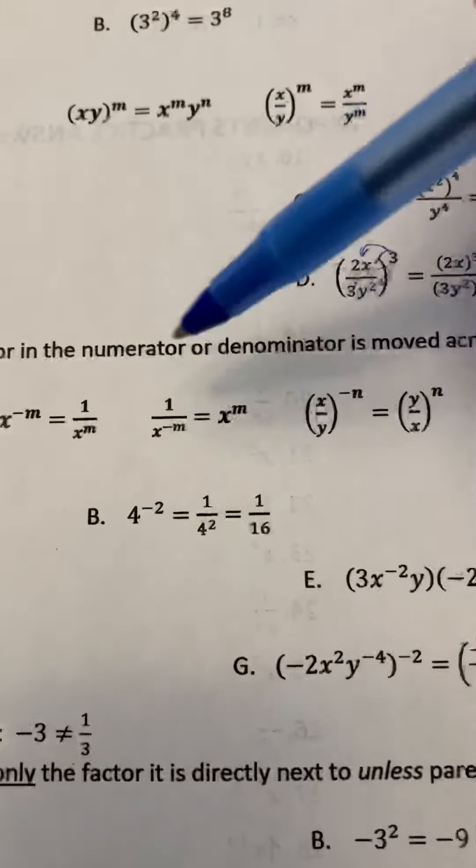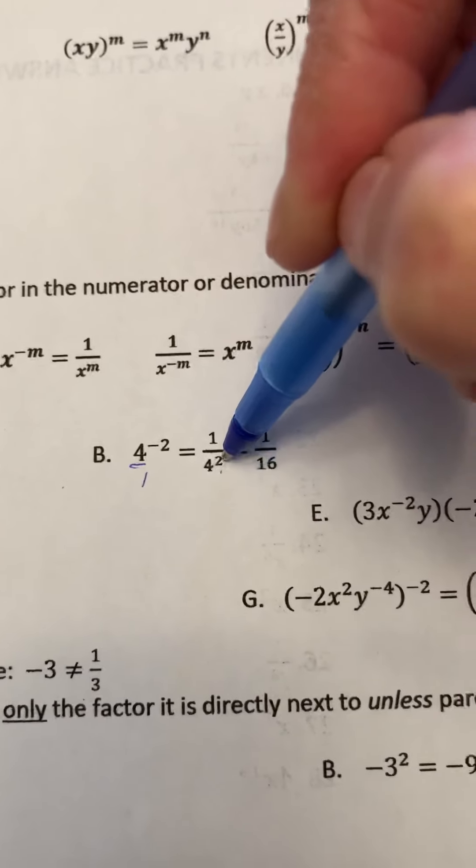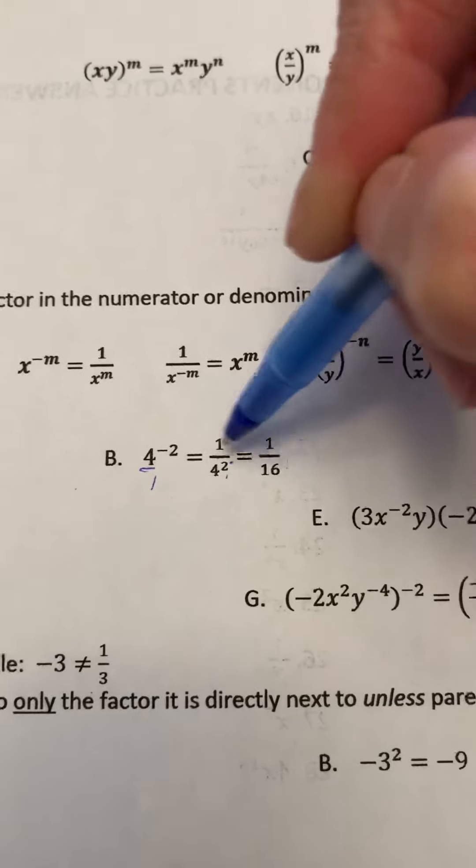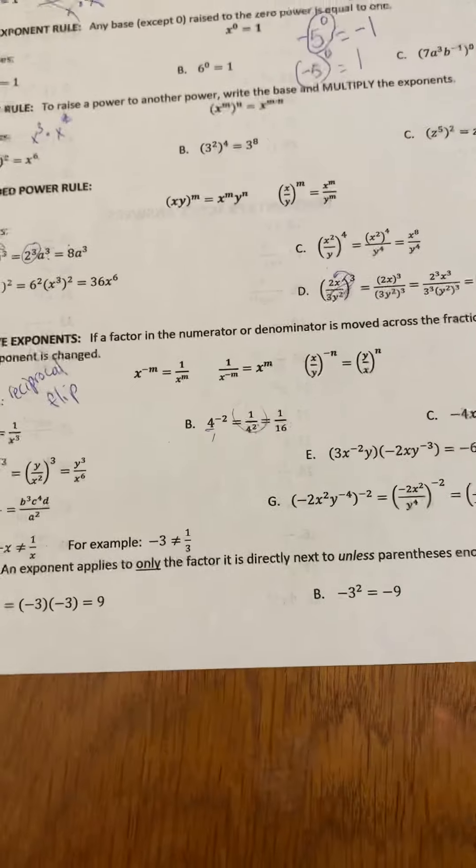If we have 4 to the negative 2, we would write the reciprocal of that base, which would be 1 quarter, and then the exponent becomes positive. We can work that one out simply. You could leave it in exponential form if you wanted, but they've just done this. There's my phone ringing.